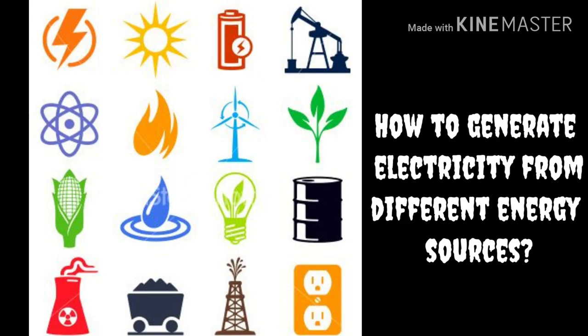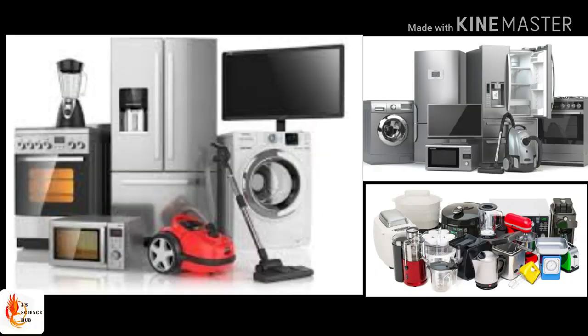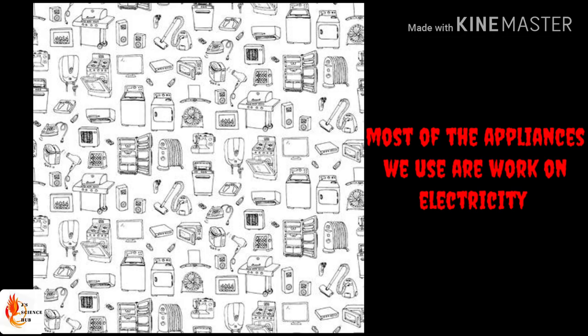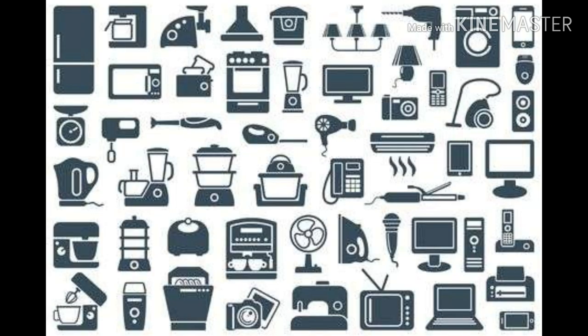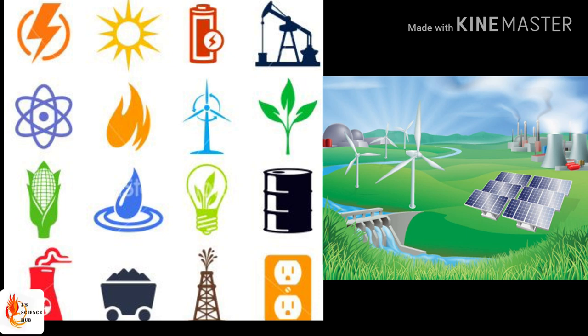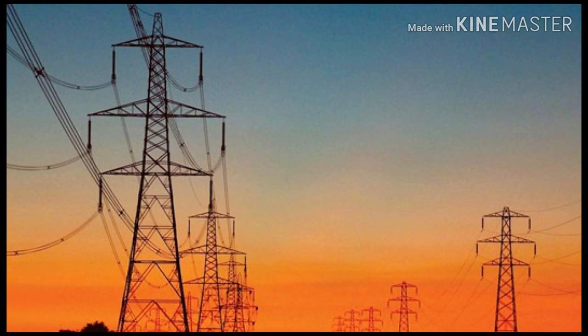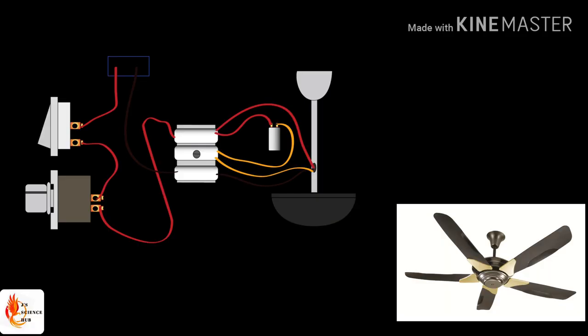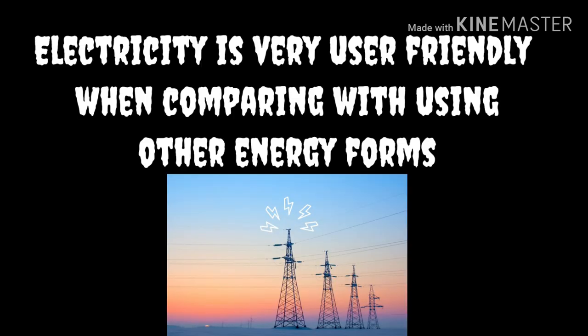Think about your home — most of the appliances you use work on electricity. So why do most appliances and instruments we use in our day-to-day life, both at home and in factories, run on electricity? Because electricity is very user-friendly. For example, if you switch on a fan, it starts to rotate immediately.